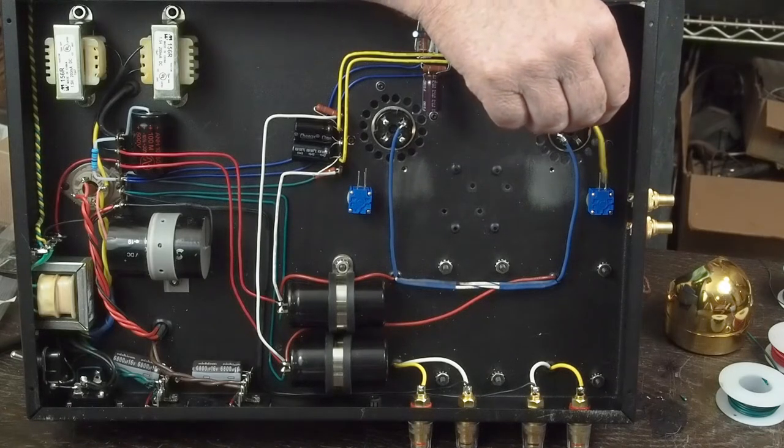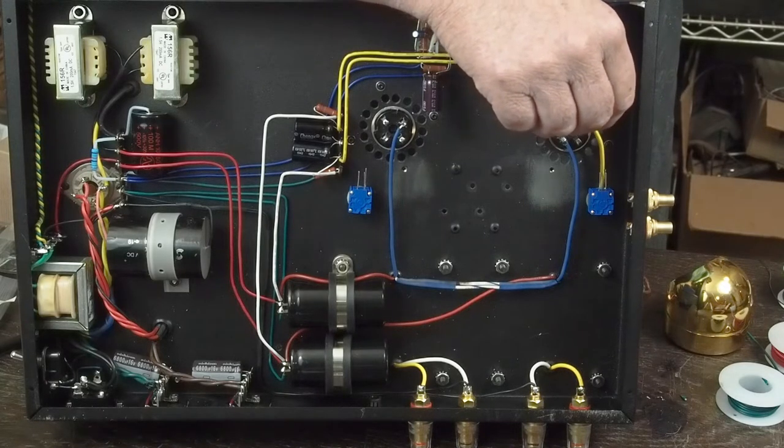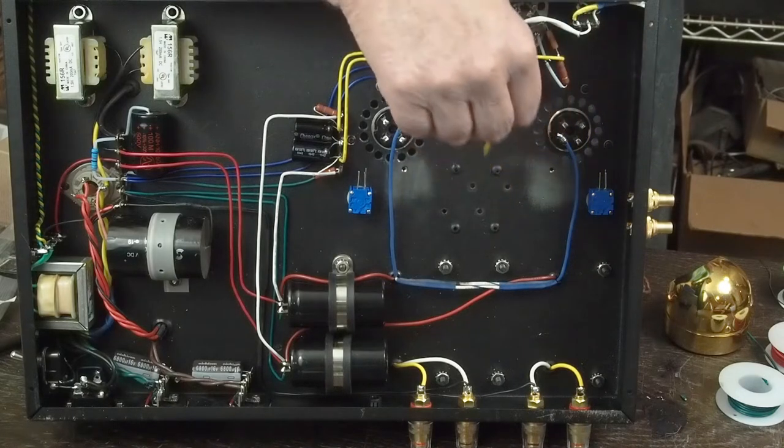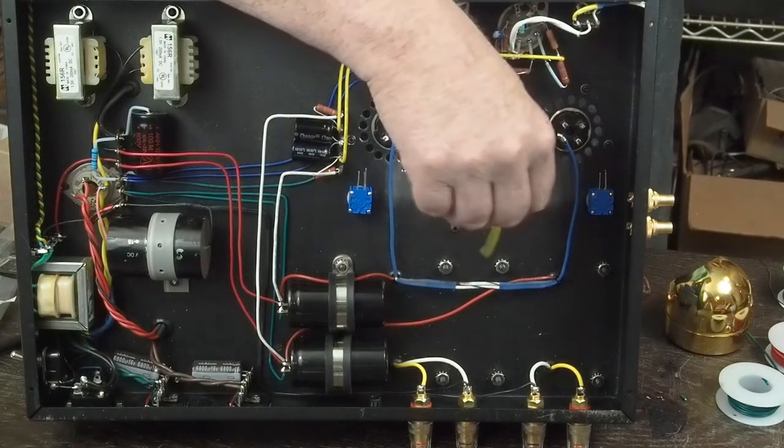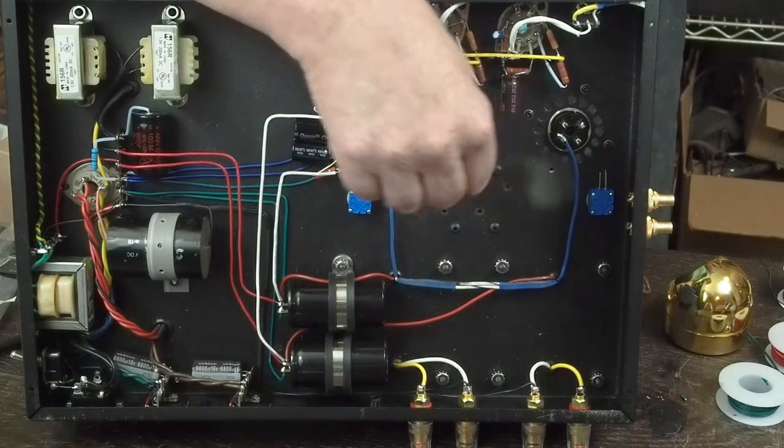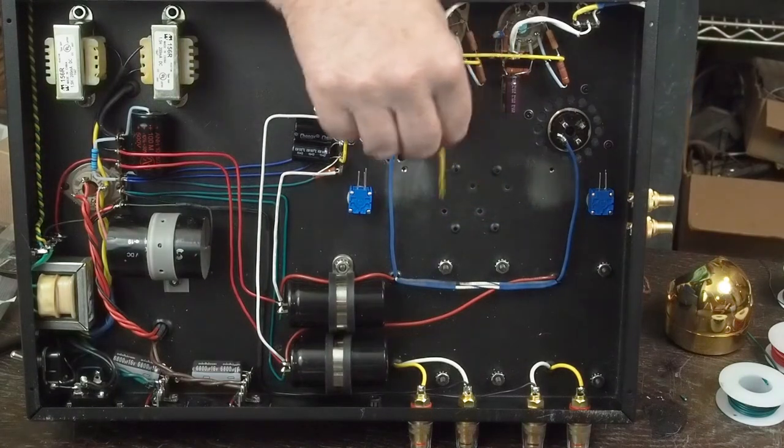And then the center of this potentiometer is going to be grounded through the cathode resistor with a cap bypassing it that I'm going to install. And we're probably going to install it somewhere around in here.